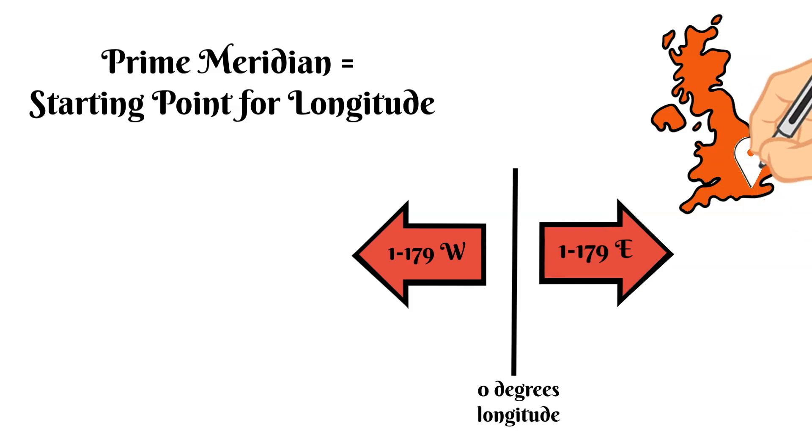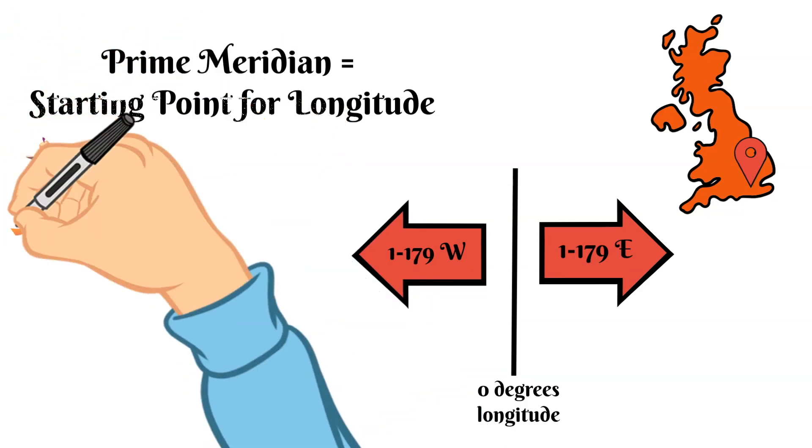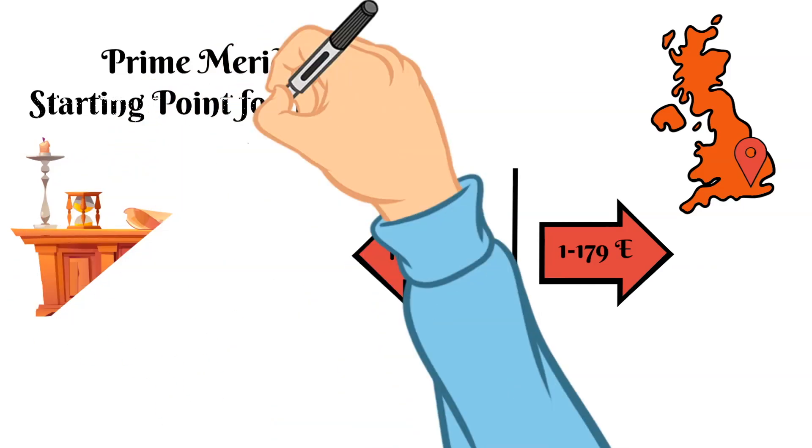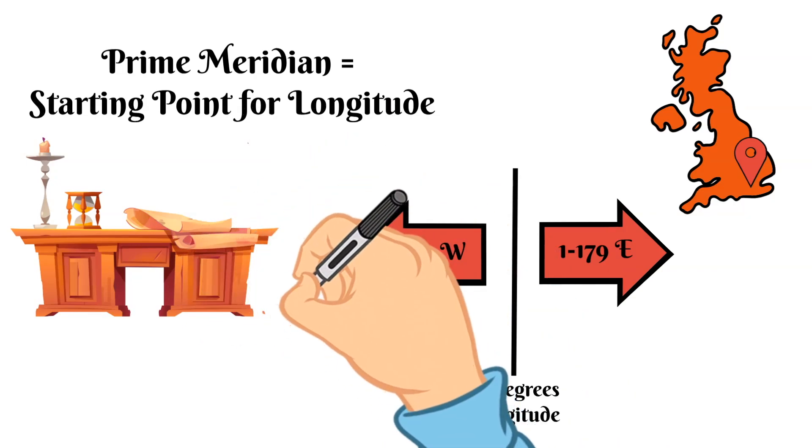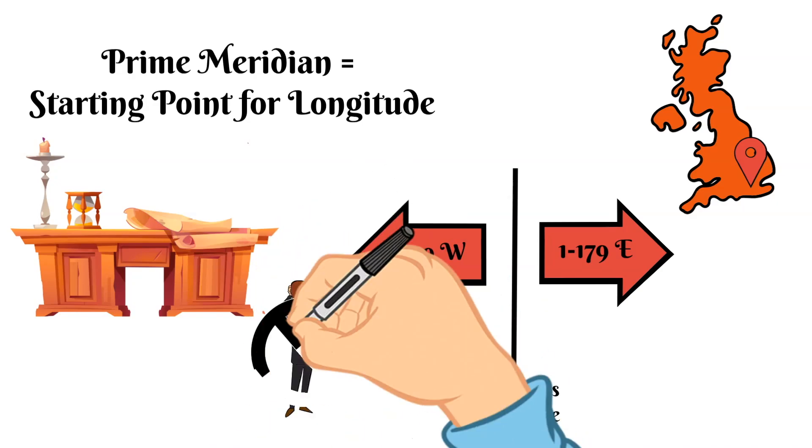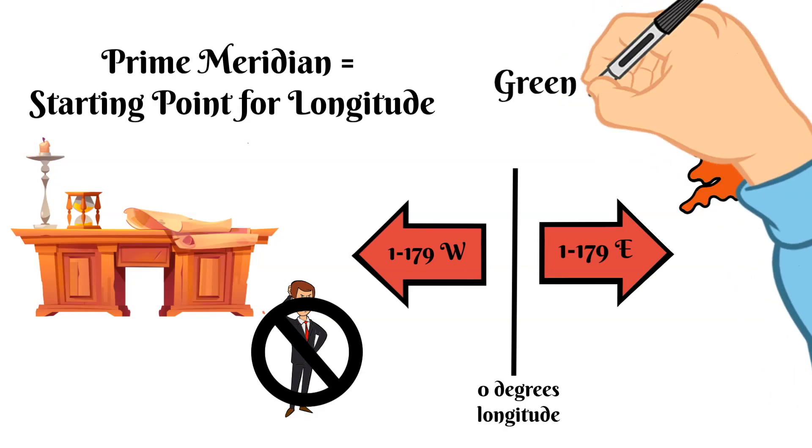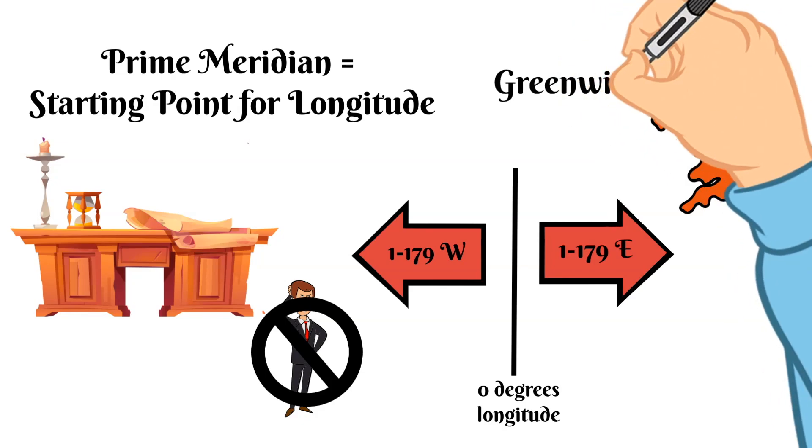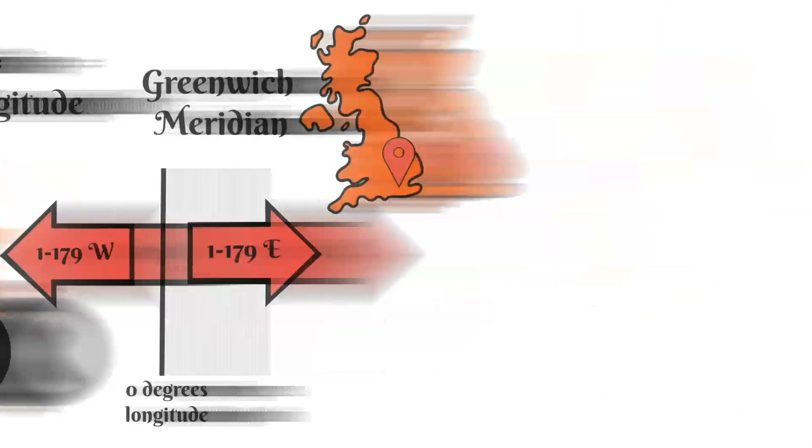Before 1884 map makers would begin numbering the lines of longitude on their maps at whichever meridian passed through their specific site of their national observatory and so many people typically used British maps because they were a leader in exploration as well as map making. Instead of creating confusion scientists were able to decide in 1884 that the starting point of longitude for everyone should just be that meridian that runs through Britain's royal observatory in Greenwich hence the nickname the Greenwich meridian.